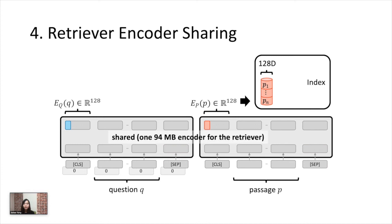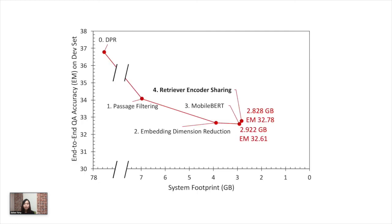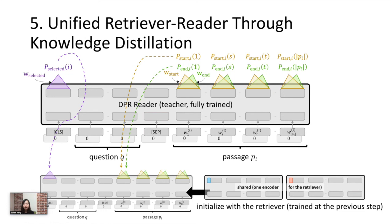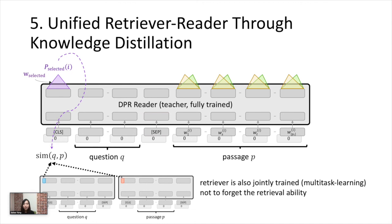What we do next is sharing the parameters of the retriever encoders. The inputs are differentiated using different token type IDs. Interestingly, we have observed that the performance slightly increases with encoder sharing. Next, we further unified the retriever and reader into one model. We make the reader use MobileBERT as the encoder, and it is initialized with the parameters of the retriever encoder trained at the previous step. Then, we train the reader using knowledge distillation from a fully trained DPR reader. While the model is trained for reading, it is also trained for retrieval in a multi-task manner, not to forget the retrievability that it has already learned.